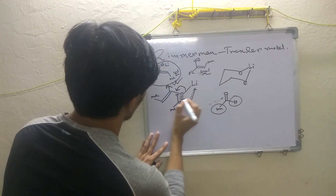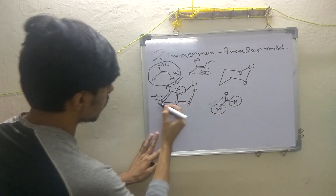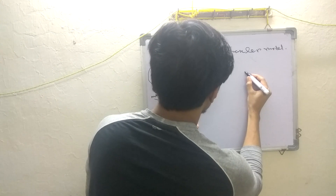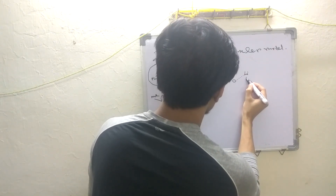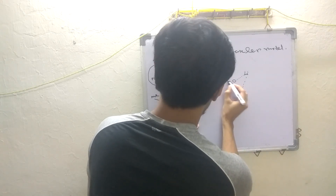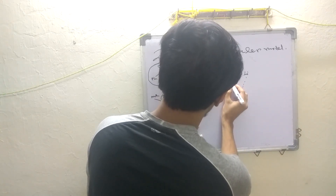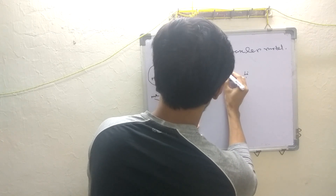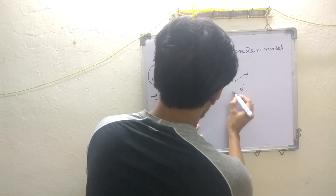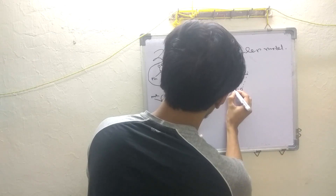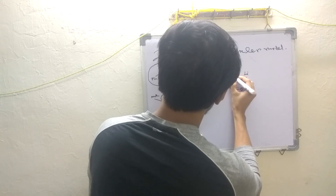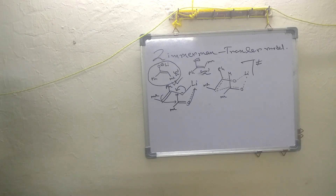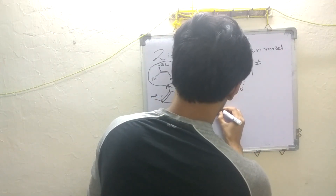This is the structure of the transition state. The oxygen of the aldehyde coordinates with the lithium. A negative charge develops and attack occurs. In the transition state: lithium is at the top, two oxygens coordinate with it, a new C–C bond is forming, the pi bond is breaking, the phenyl group is here and the methyl is here, hydrogen is here and methyl is here on the aldehyde side.